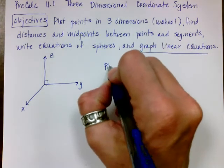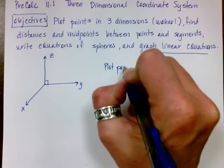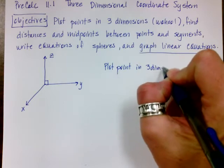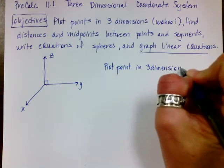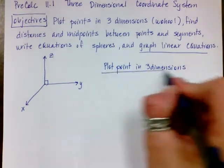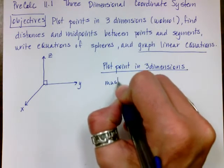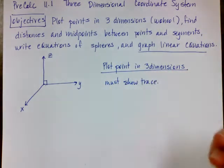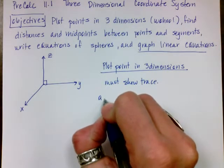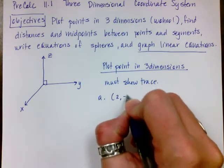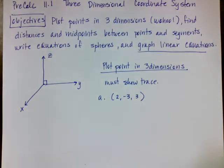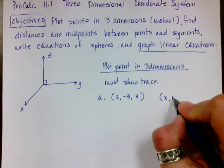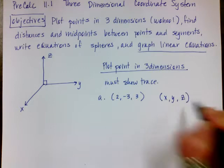The first thing I'm going to show you is how to plot points in three dimensions. When you do this, you have to show what's called a trace — you must show your trace. So for my first point I'm going to plot (2, -3, 3). Those coordinates are x, y, and z — that's the order our coordinates appear.